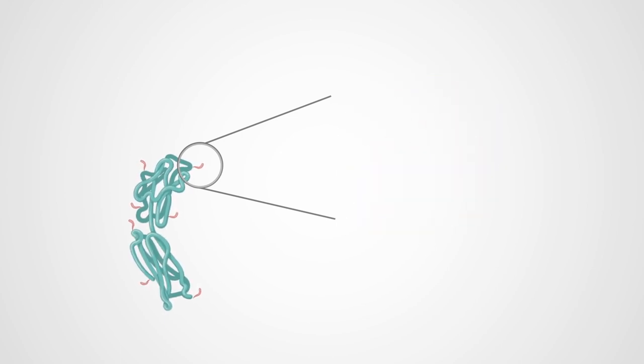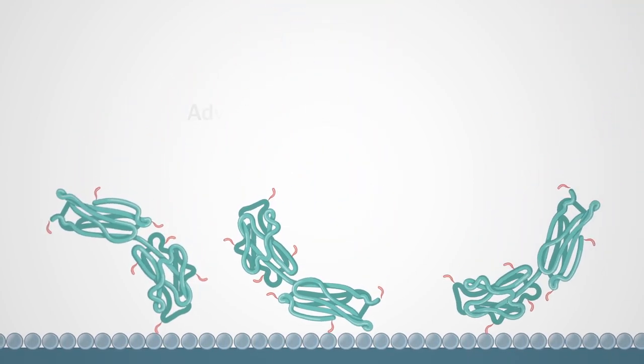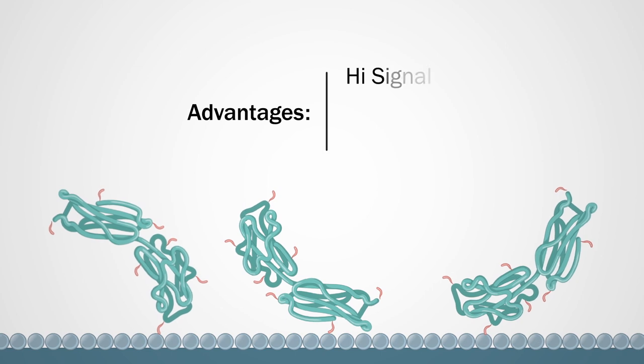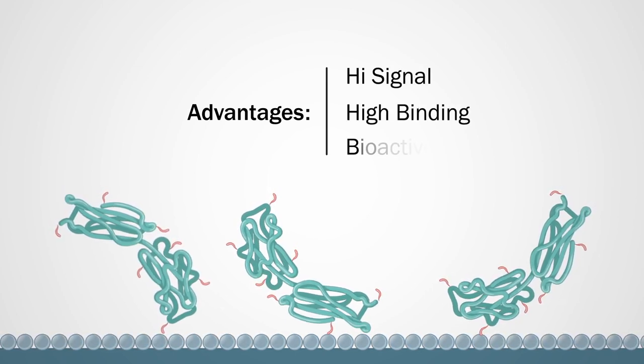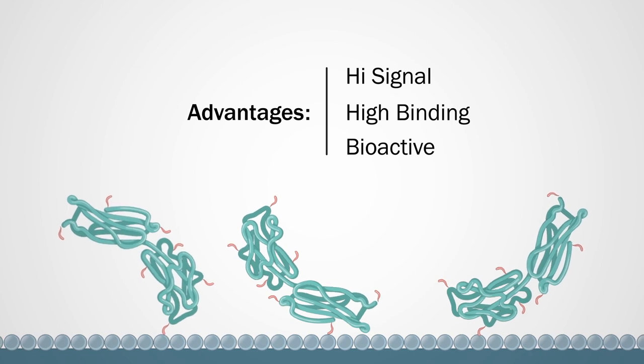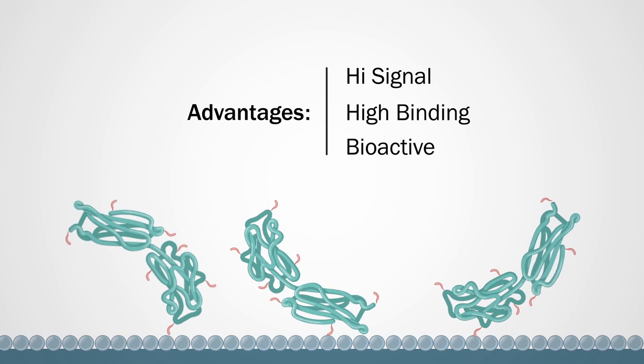The end result is a biotinylated protein with a high biotin-to-protein ratio, important for applications requiring high signal strength and binding efficiency. Amine biotinylated proteins are designed for use in ELISA, immunoprecipitation, SPR, flow cytometry, and other applications.